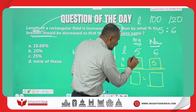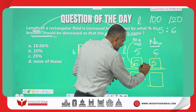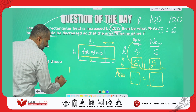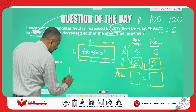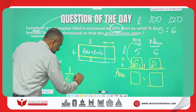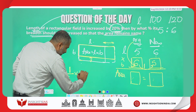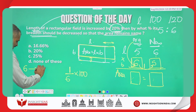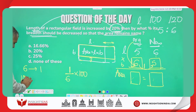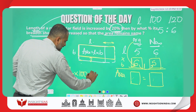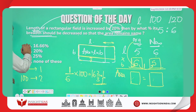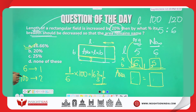Breadth originally was 6, now it has become 5 — a decrease of 1. From where is it decreasing? From 6. For 6 if it decreases by 1, for 100 how much? This is the fraction 1/6; multiplied by 100 it becomes a percent. The calculation gives 16 and 2/3 percent, which is 16.66 percent. This is the answer.